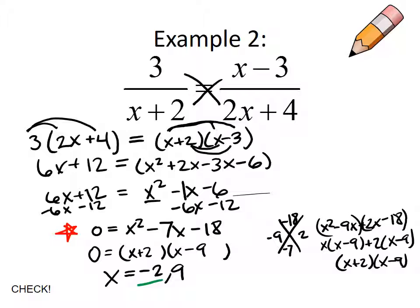We can still check our answers. I'm going to check out the negative 2 first. If I plug that in for all of my x values, negative 2 plus 2 is 0. Hmm, equals negative 2 minus 3 is negative 5. Negative 2 times 2 is negative 4 plus 4 is 0. Now technically this is undefined, right? We can never divide by 0, but both sides are undefined.